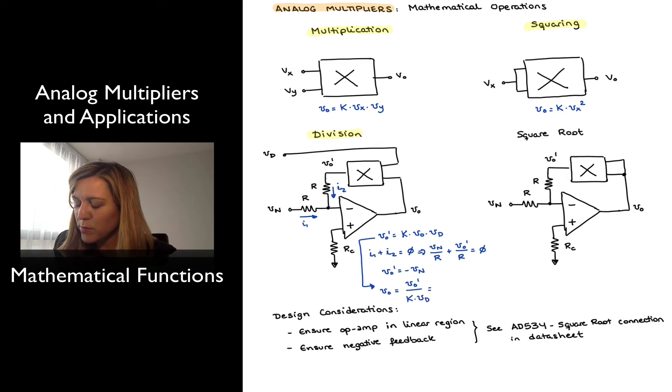And since vout prime is equal to negative vn, I can rewrite this as negative 1 over k times vn over vd. And so my output voltage will be proportional to the division or the ratio between the two input signals, vn and vd. So the circuit performs the mathematical operation of division.